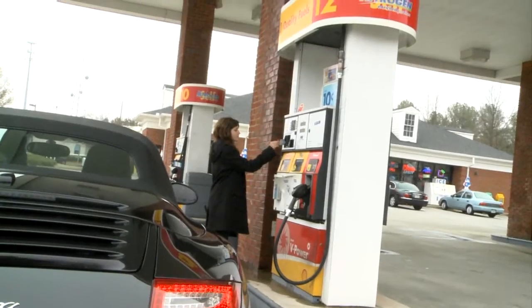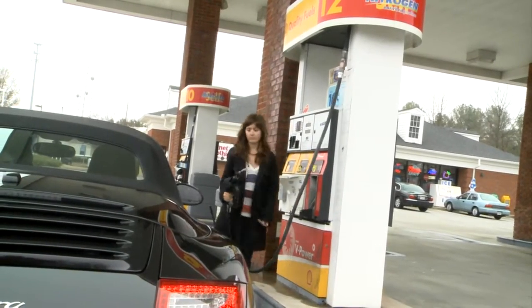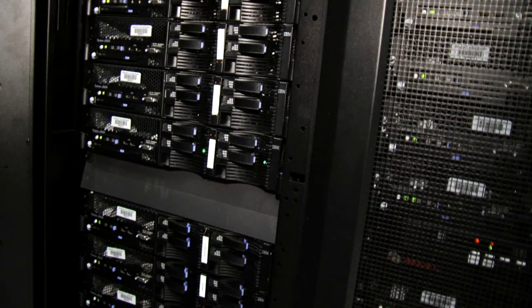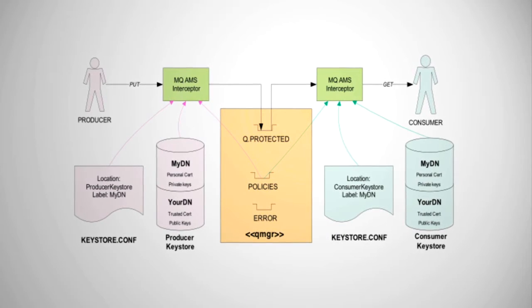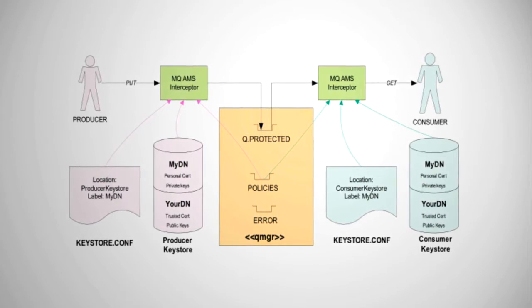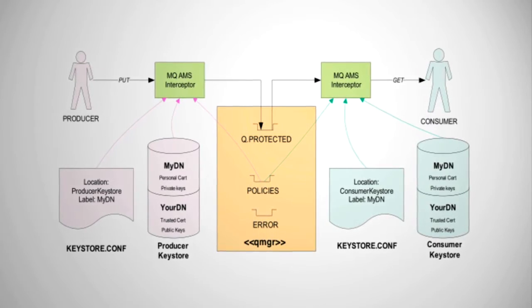WebSphere MQ AMS protects data not only as it flows across the network, but also when it's at rest on the queues. For example, in the retail industry where card payment transactions are processed, each transactional message is transported in its own cryptographic envelope. The envelope travels with the message from the producing application all the way to the consuming application, ensuring messages are never in plain text while on the queues or in log files, successfully securing card and personal identifying information.